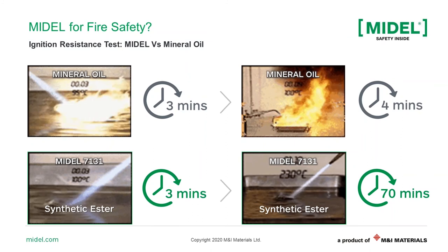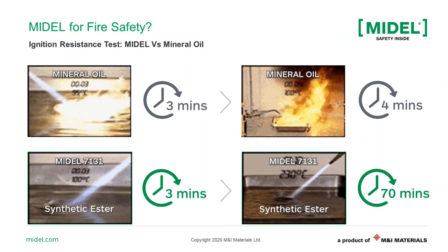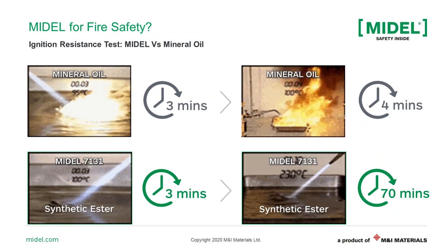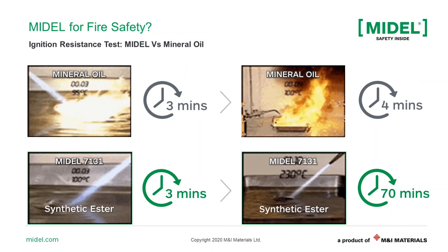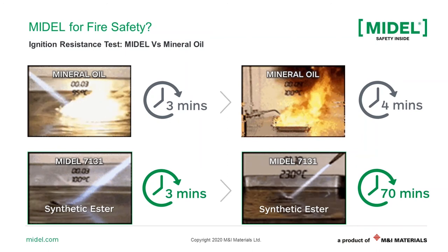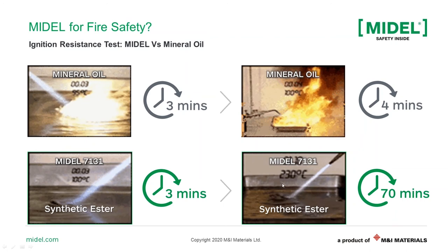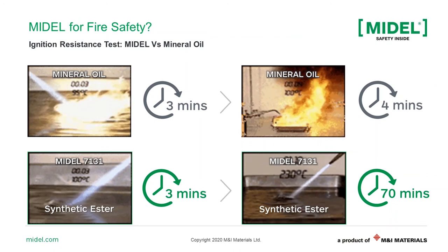In the case of Midel 7131, after three minutes we can see the bath temperature of the liquid is around 100 degrees C, which is a little bit higher than mineral oil — that is due to the better thermal conductivity of the ester. After 17 minutes, the bath temperature is around 230 degrees C, which is below its flash point and fire point. The torch is just blowing the surface of the liquid. The time is much, much longer than 70 minutes, compared to four minutes for mineral oil. In practical life, this gives you much longer time — for example, for evacuation of a building or a mine.